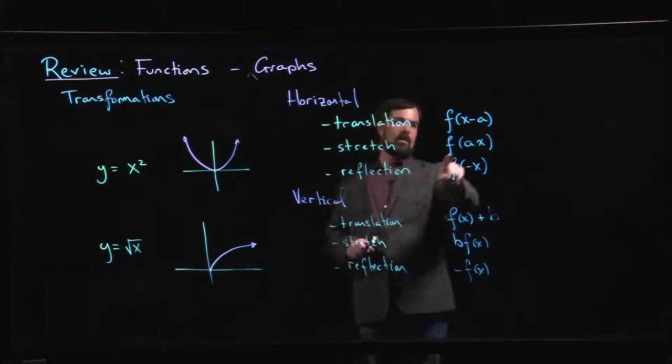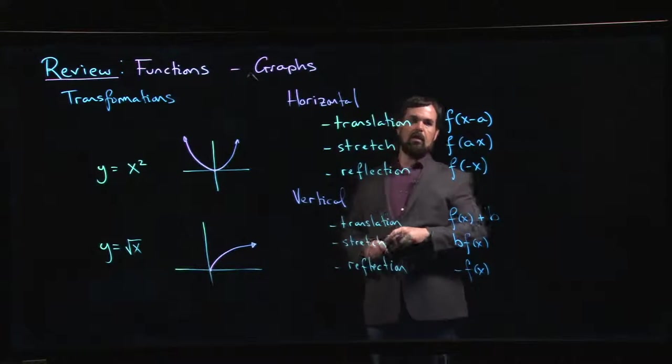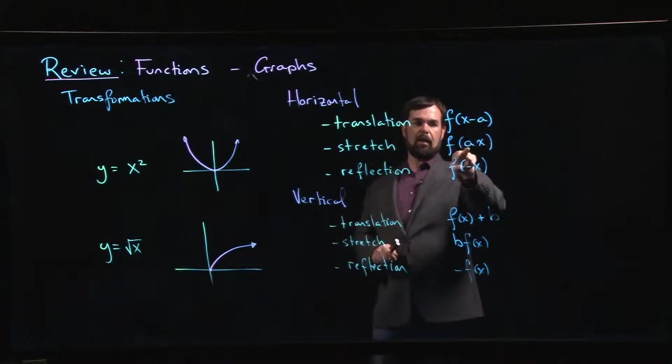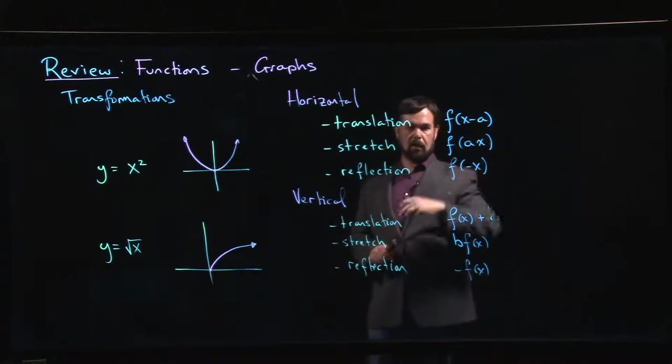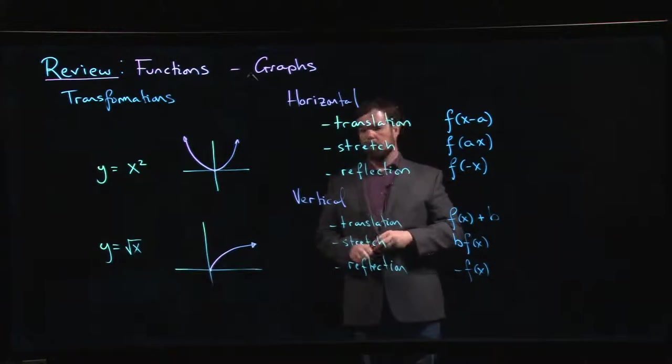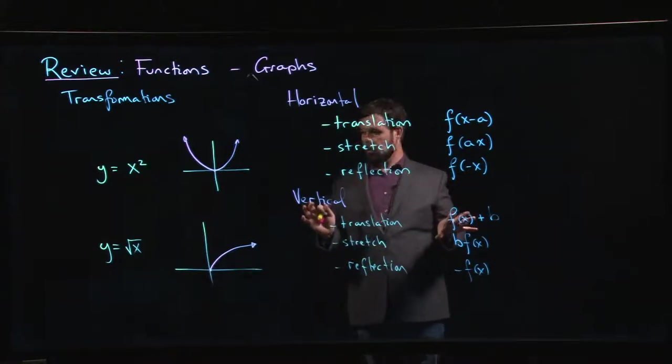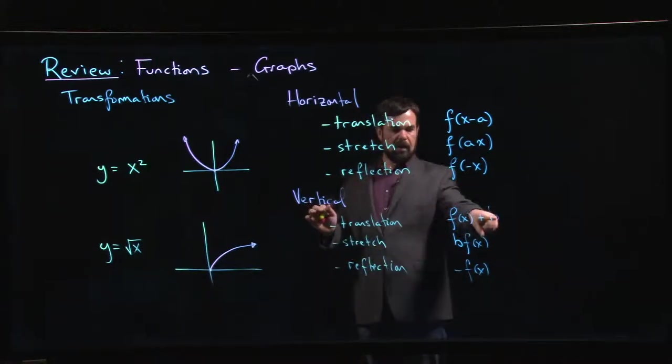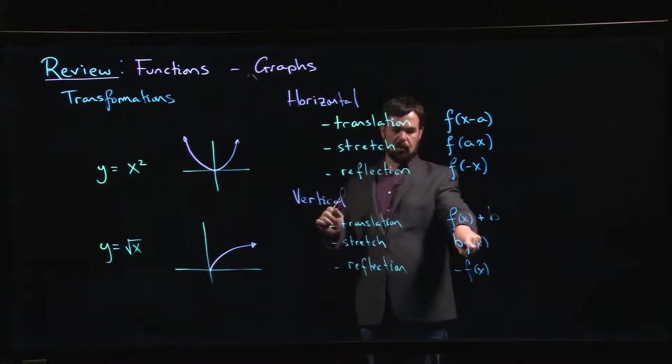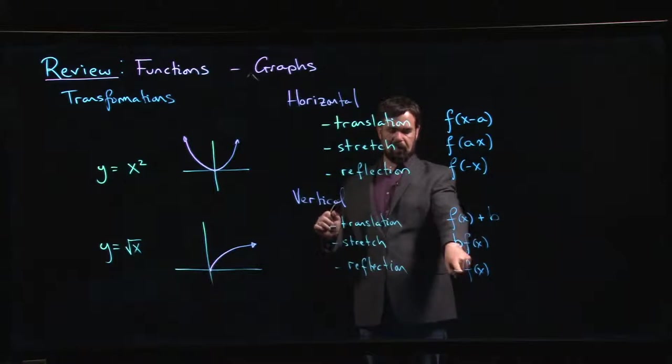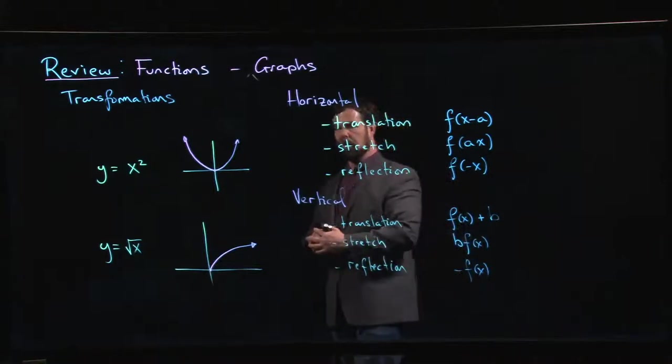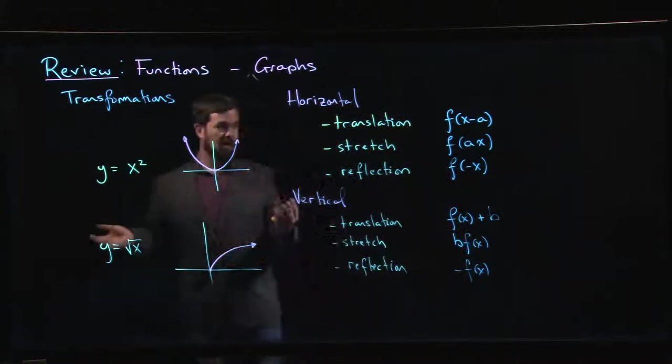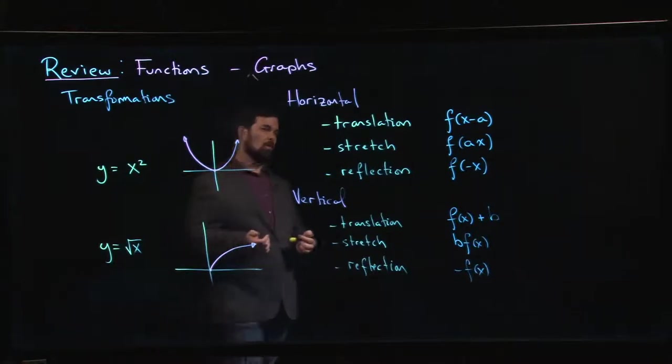For horizontal effects you're applying something inside the function - you're subtracting a number from x, multiplying x by a number, putting a minus sign in front of x. For vertical transformations it happens outside the function - you do f(x) and then you add B, multiply, or apply the minus sign. Horizontal is inside, vertical tends to be outside.